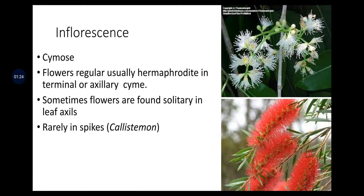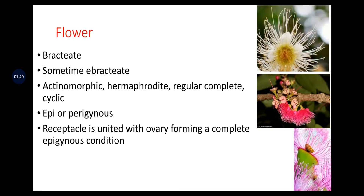Inflorescence: cymose. Flowers are regular, usually hermaphrodite in terminal or axillary cymes. Sometimes flowers are found solitary or in leaf axils, and rarely in spikes — varied spikes are found in Callistemon. Flowers are bractate, sometimes ebractate, actinomorphic, hermaphrodite, regular, complete, cyclic, epigynous or perigynous. The receptacle is united with the ovary, forming a complete epigynous condition.